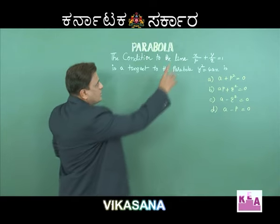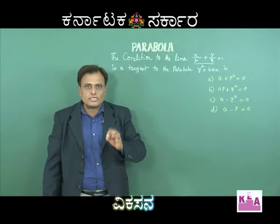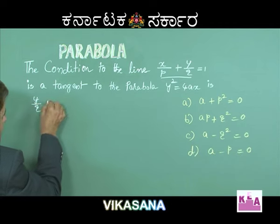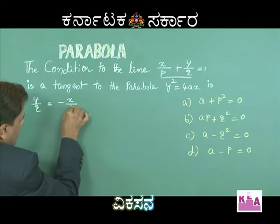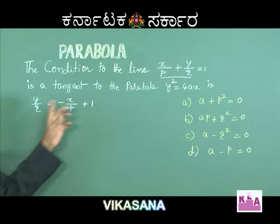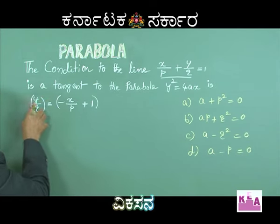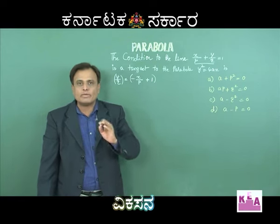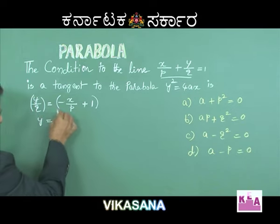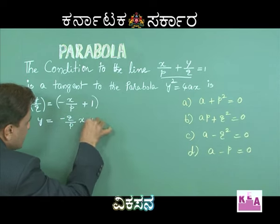Before applying this, take the given equation and express it in the form of y = mx + c. The given equation can be written as y/q = -x/p + 1. Multiplying both sides by q, we get y = (-q/p)x + q.